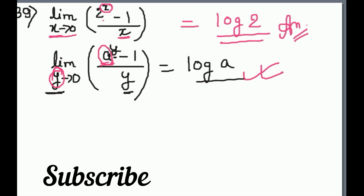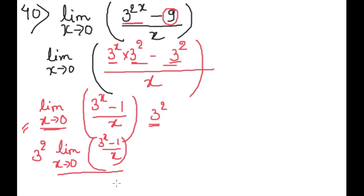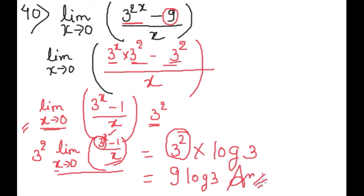अब यहां फिर से question number 39 वाली चीज़ देखेंगे: जिसके limit है वही power में है और वही यहां भी है, तो log a होता है answer। यहां पे भी वही है, x के limit है, x log 3 — यह हो जाएगा 9 log 3, हमारा answer। इसी के साथ limit का first chapter complete होता है। अगर आपको वीडियो अच्छा लगा तो please video को like करें, दोस्तों के साथ share करें और channel को subscribe करना बिलकुल मत भूलें। Thank you, have a nice day.